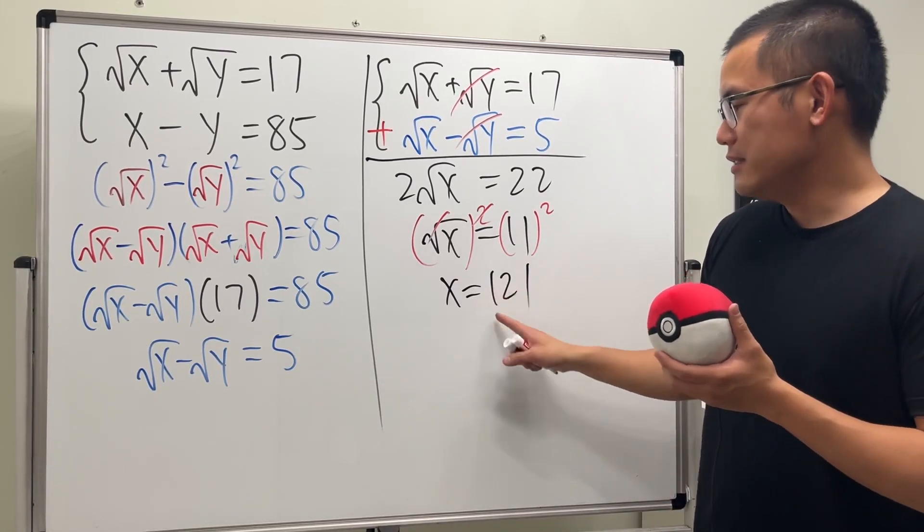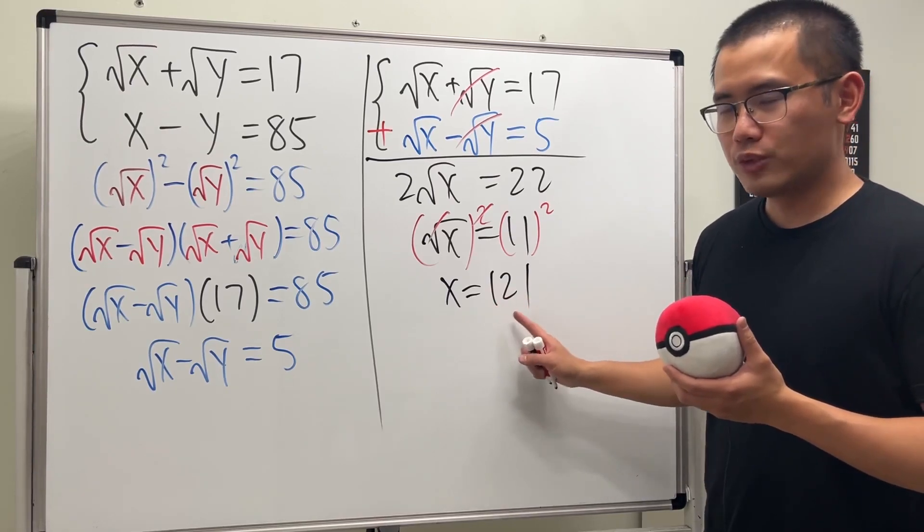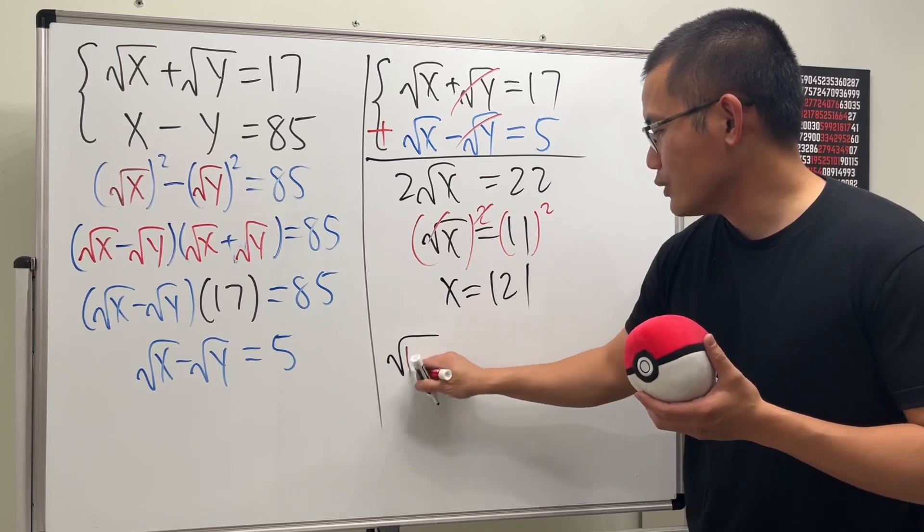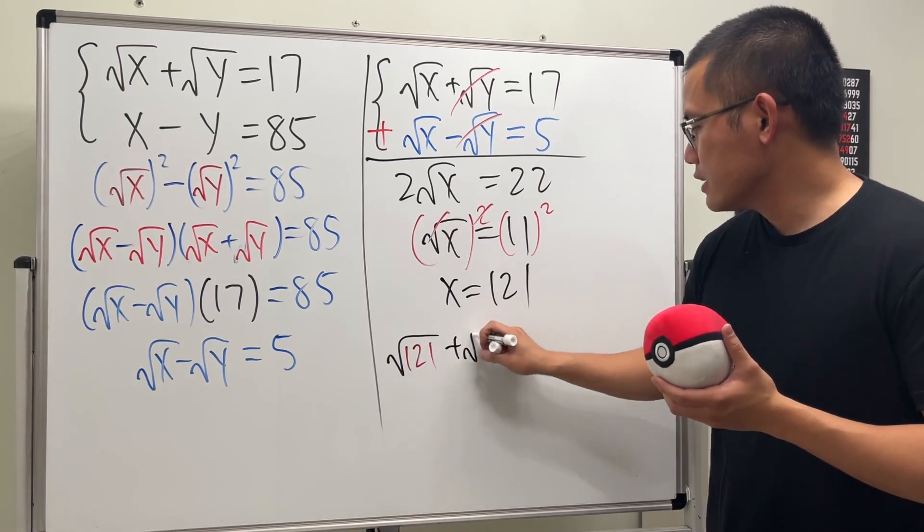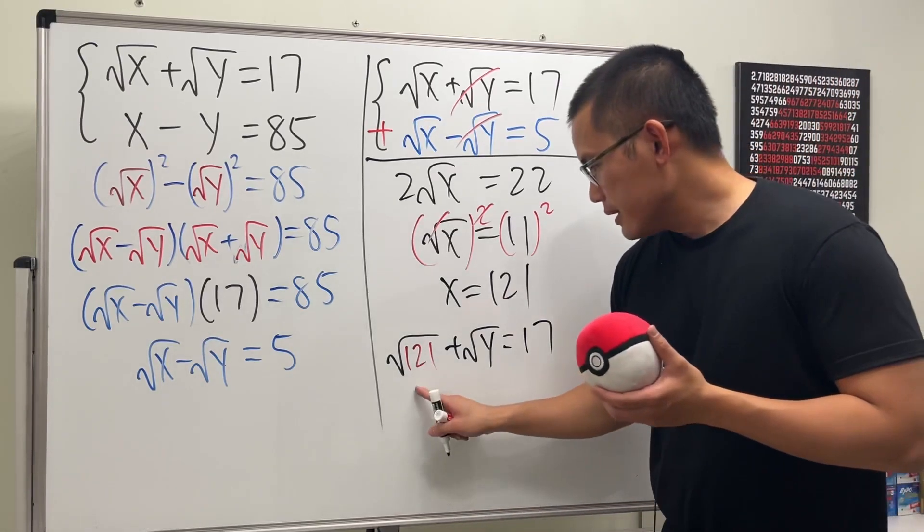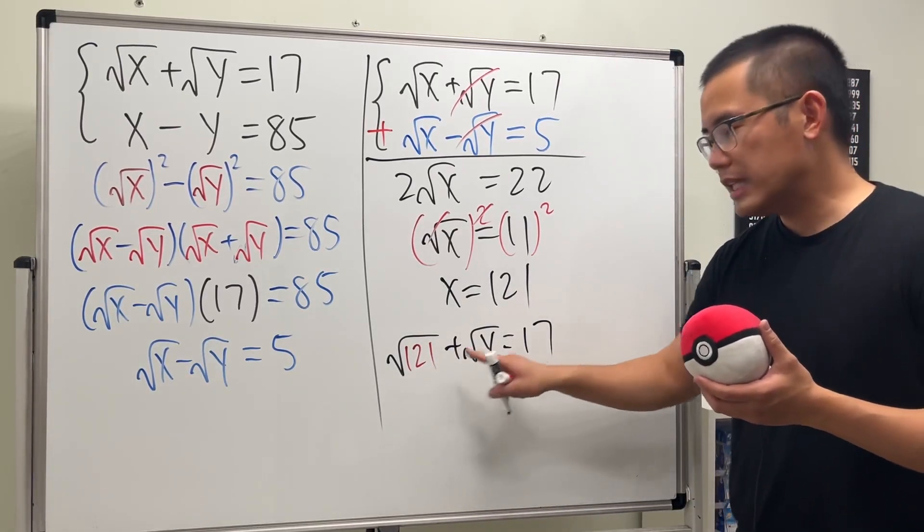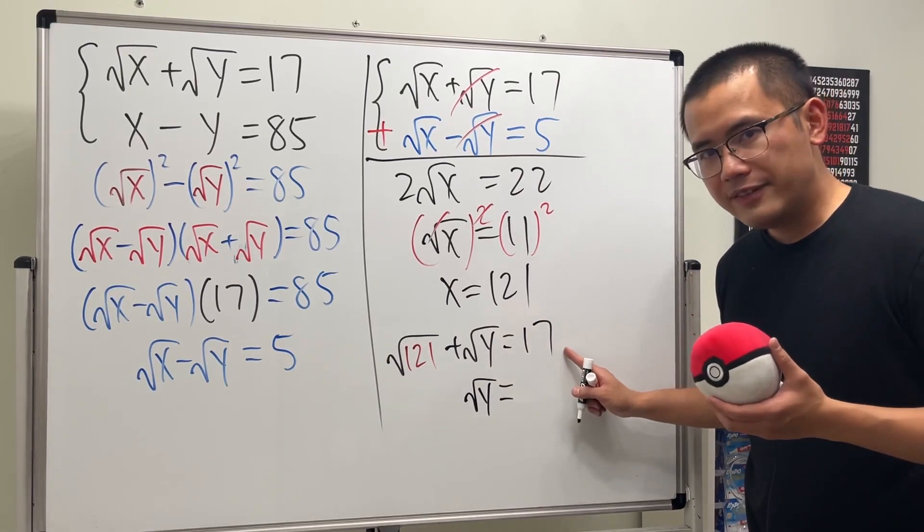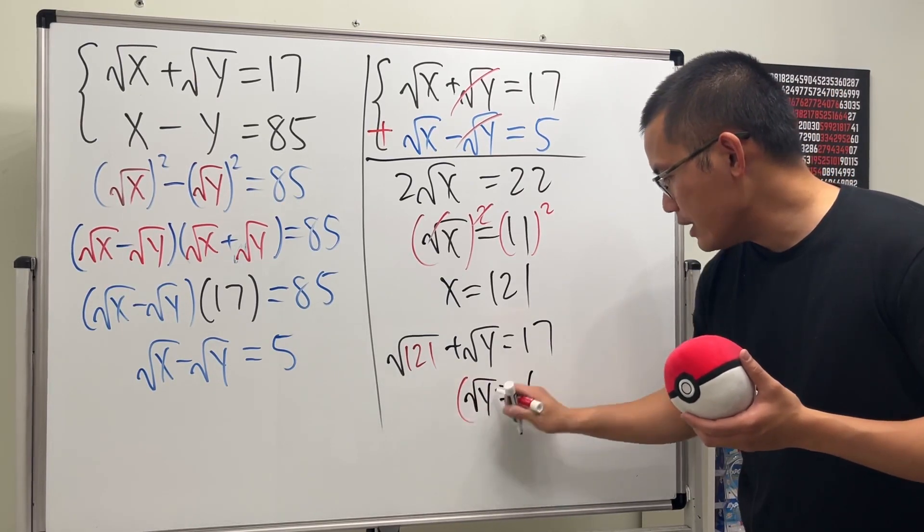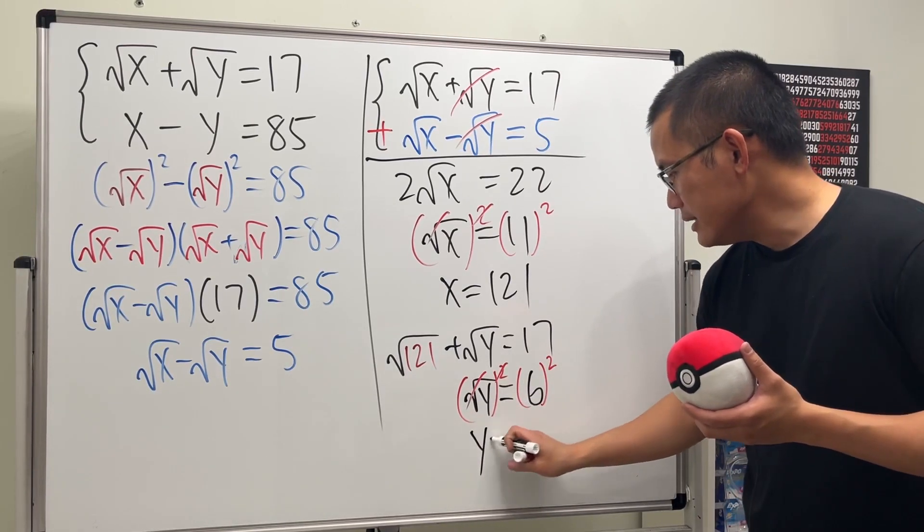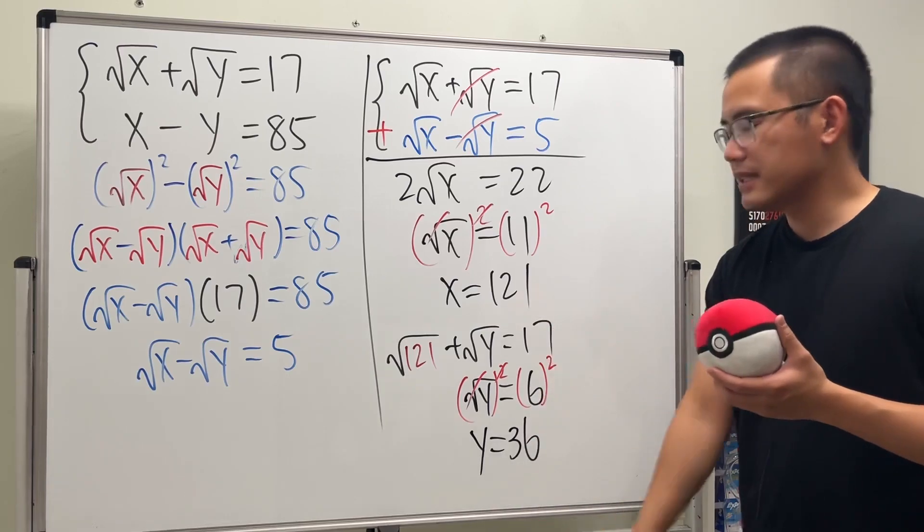And we can just put 121 back to the first equation. So we get square root of 121 plus square root of y being equal to 17. This is 11. I'm going to subtract 11 on both sides, so we get square root of y being equal to 17 minus 11 is 6. And then we can just square both sides again, cancel, y is equal to 36.